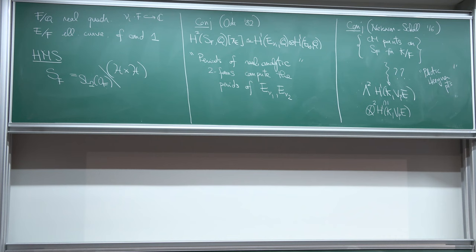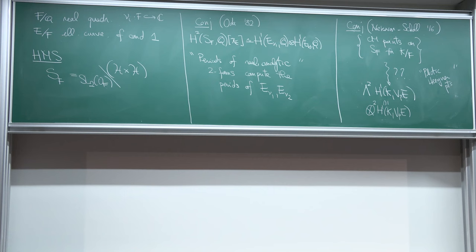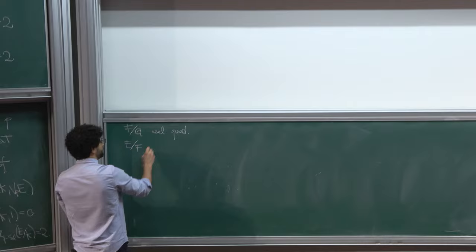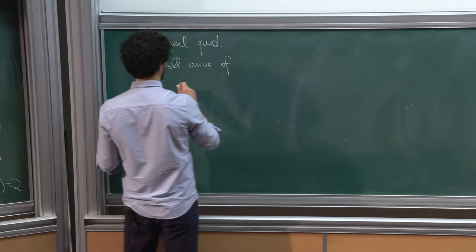I first heard about this conjecture in 2016 at the Rubin birthday conference, though at the time I had just started my PhD. Jan Nekovář was hinting at a connection between Henri Darmon's theory of Stark–Heegner points. A few years ago I started thinking about what I could do with these conjectures. If you did your PhD in Montreal, you'd learn that if there's something global you want to do but don't know how, your best chance is to do something p-adic.